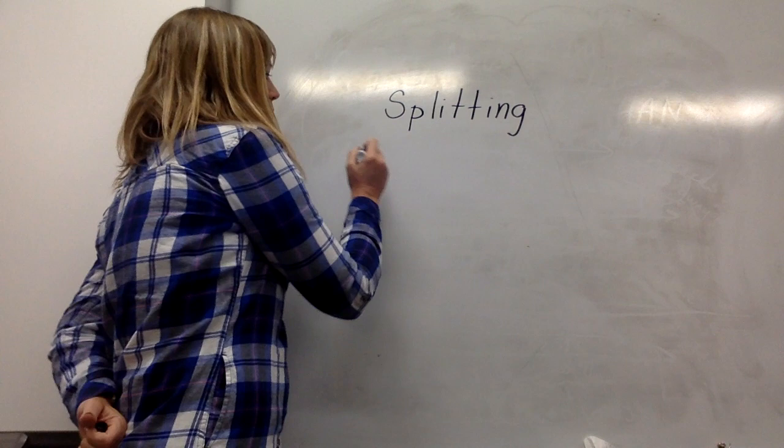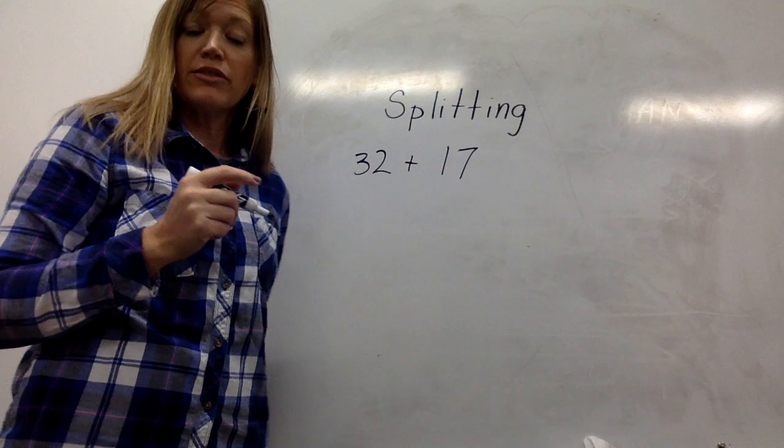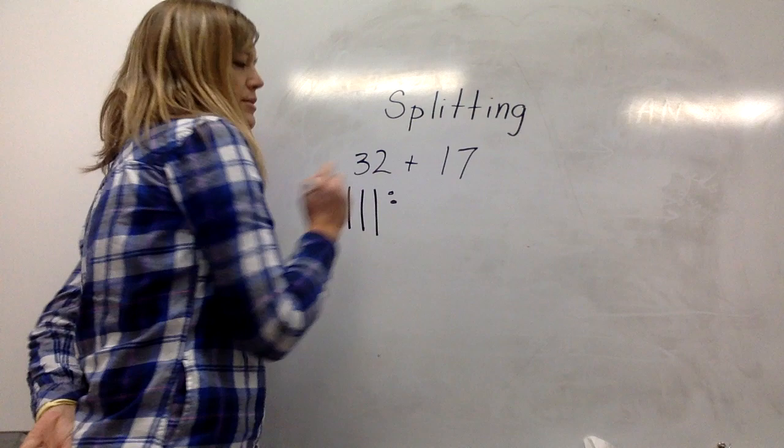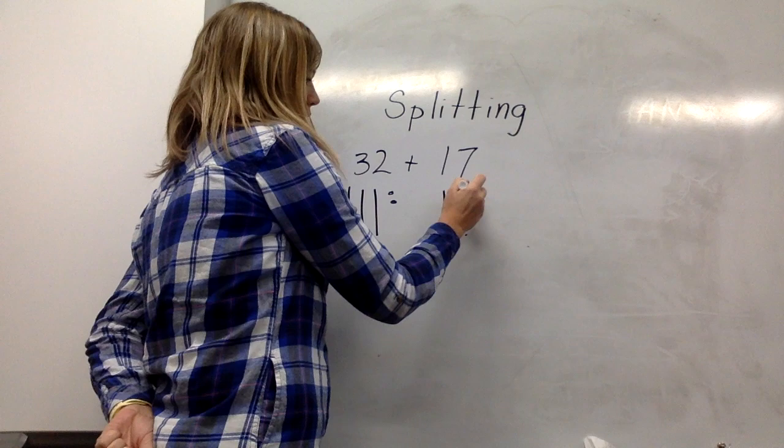In the problem 32 plus 17, kids understand through their place value work with manipulatives and base 10 pieces that 32 is three tens and two ones. We also understand that 17 is one ten with seven ones.